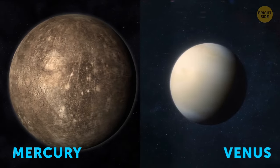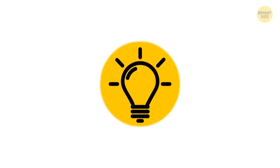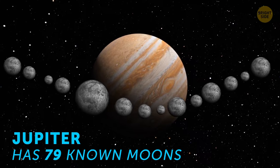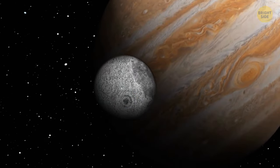Mercury and Venus are the only planets in the solar system that have no known moons. Jupiter has 79 known moons orbiting it, the largest of which is Ganymede and it's bigger than Mercury.